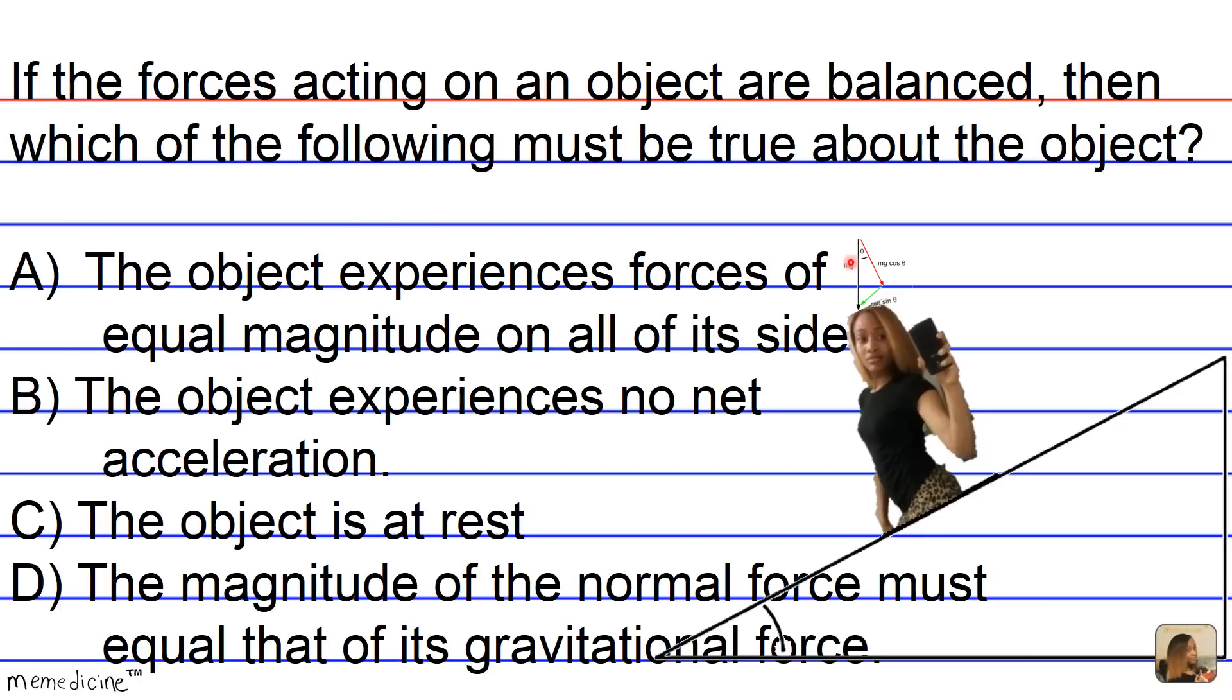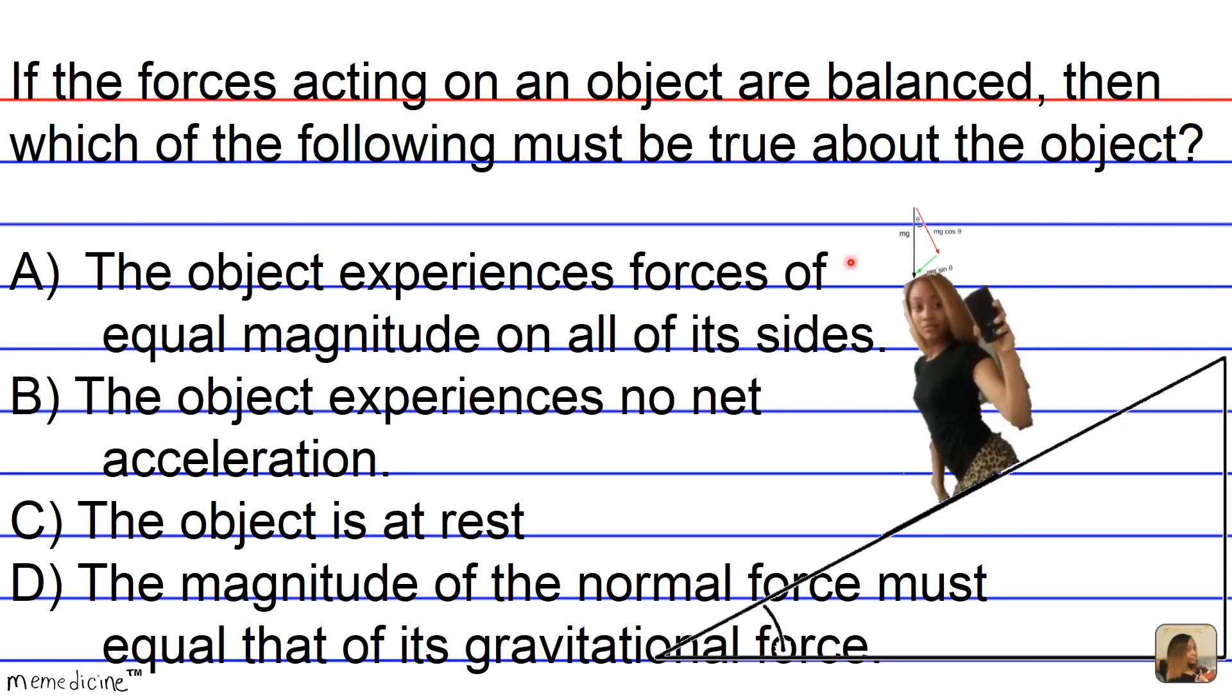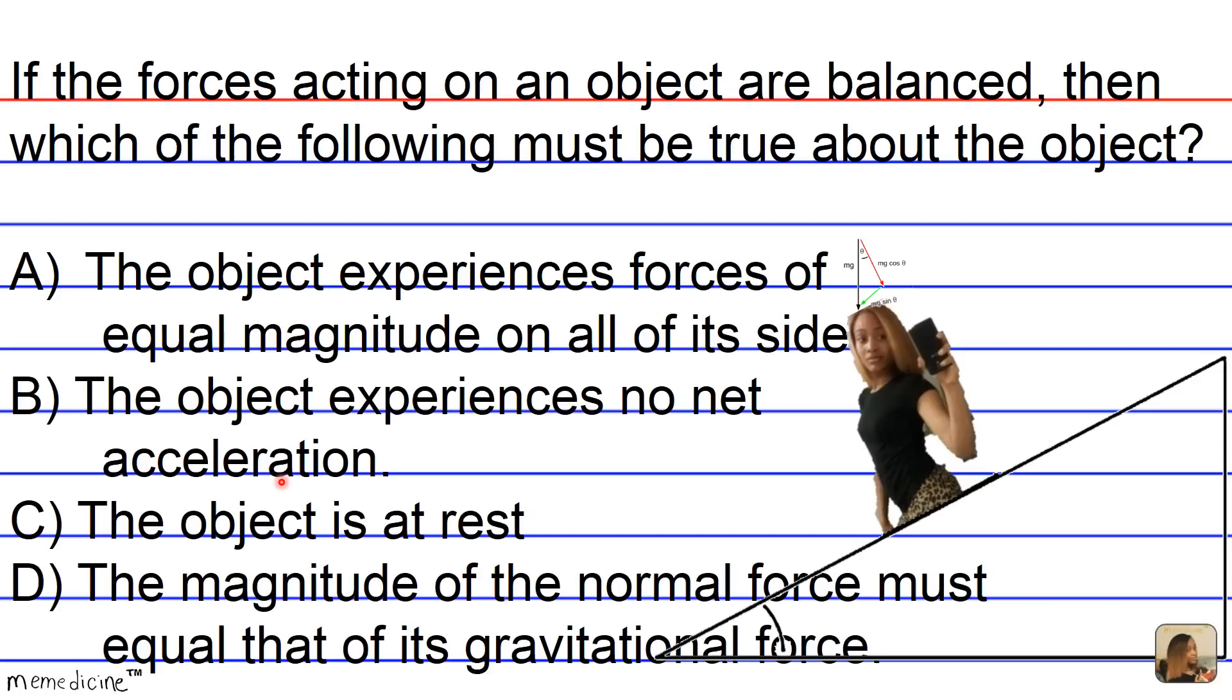Also, an object can be in motion experiencing constant velocity. So there's no necessary requirement for the object to be at rest, although an object at rest is experiencing a constant velocity of zero meters per second squared.